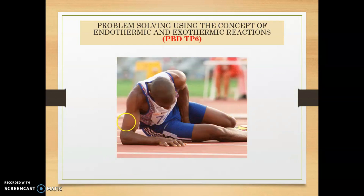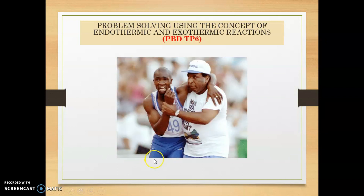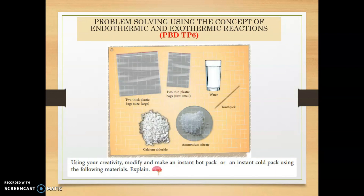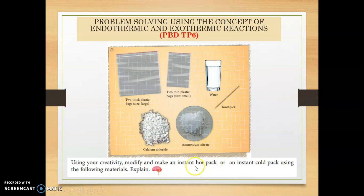Berdasarkan situasi yang berlaku pada atlet ini, apakah jenis pack yang sesuai digunakan — adakah instant cool pack atau instant hot pack? Dengan menggunakan kreativiti masing-masing, kamu modify dan buat sama ada instant hot pack ataupun instant cool pack, bergantung kepada situasi tersebut, menggunakan bahan-bahan yang telah diberi. Kamu kena explain macam mana instant hot pack atau instant cool pack kamu berfungsi — pilih sama ada calcium chloride ataupun ammonium nitrate yang sepatutnya digunakan. Jangan tersalah pilih.